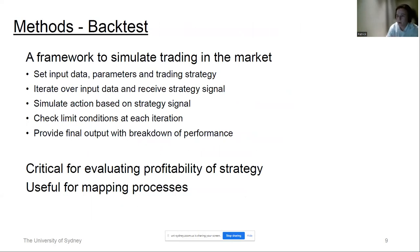Moving to methods, starting with the backtest framework — the best way to test and evaluate how strategies perform by simulating an environment that reflects the market. Basic elements include setting input data such as currency, frequency, and time; initial parameters such as stop loss and take profit; and a trading strategy. The framework iterates over data, returns a trading signal at every point, and a broker agent simulates an action. This is also useful for mapping processes — simulating a backtest then feeds results into a classification model to classify whether a trade was profitable or not.